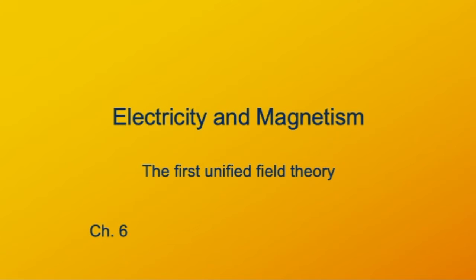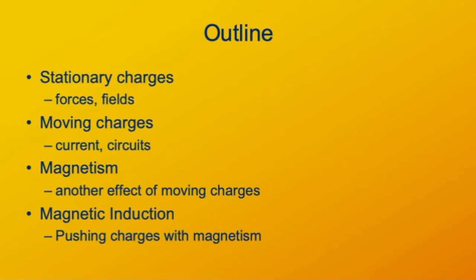It turns out that electricity and magnetism are intimately connected with each other. We're going to start out examining stationary electric charges, otherwise known as static electricity, how those interact with each other. Primarily it's a force law that we're interested in. We can talk about the idea of an electric potential as well. Then we look into moving charges in two ways.